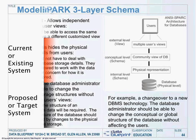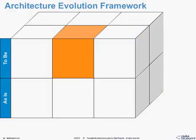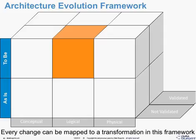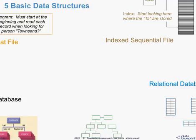What this really does is set up a constrained environment for our models. Our models are as-is, to-be, conceptual, logical, and physical. If we throw in one other dimension — validated or not validated — every change that we make to these models is some sort of a transformation in this particular framework. It constrains your environment and allows you to understand from a modeling perspective how you're doing these. Our strategic-level models are something we'll finish up with in strategy. Tactical-level models and operational models are each important for what we're trying to accomplish, because we need to know and understand what's going on with the various data structures involved.